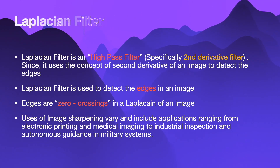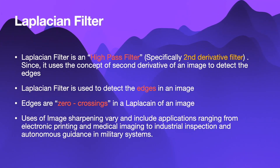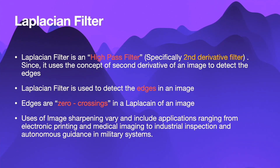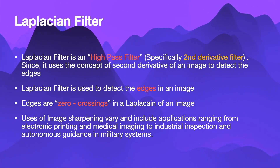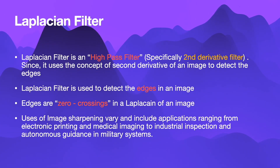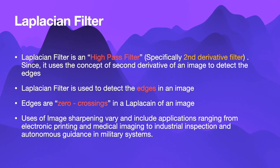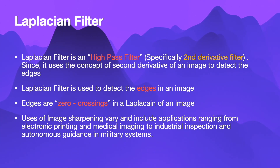Now let's discuss about what is the Laplacian filter. It's basically a high pass filter — specifically, it's a second derivative filter. This filter is mainly used to detect the edges in an image. Edges are nothing but high frequency components. Since the Laplacian filter is a high pass filter, only these edges are passed through the filter, and these edges are zero crossings in the Laplacian of an image.